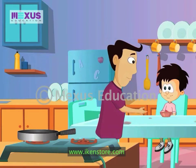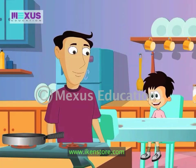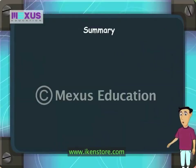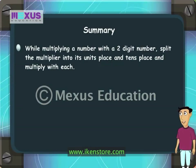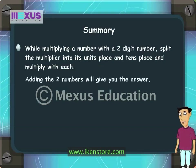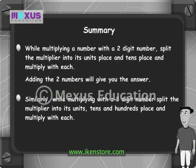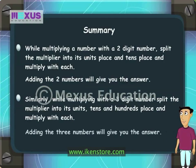Now, do you want another omelette? Only if you teach me how to make it! Here's how you multiply using 2 or 3-digit multipliers: while multiplying with a 2-digit number, split the multiplier into its units and tens, multiply with each, and add the 2 numbers. Similarly, while multiplying with a 3-digit number, split the multiplier into its units, tens, and hundreds, multiply with each, and add the 3 numbers.